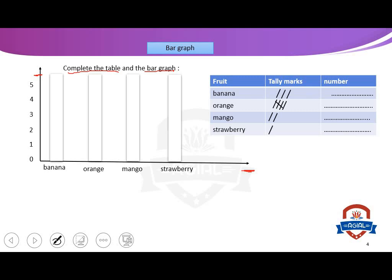Banana — how many pupils like banana? Count: one, two, three. Excellent, so we write three. How many pupils like orange? Count with me: one, two, three, four. Excellent. And we write two for mango. How many pupils like strawberry? Excellent — only one.